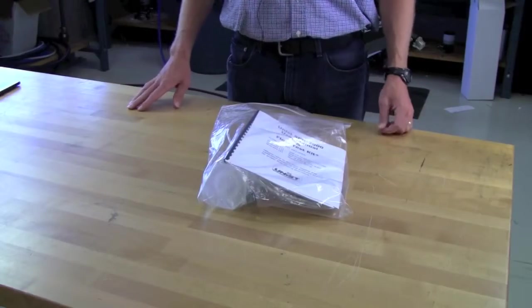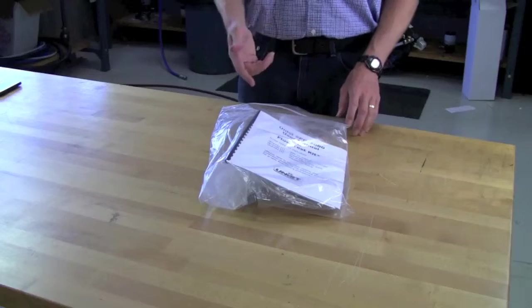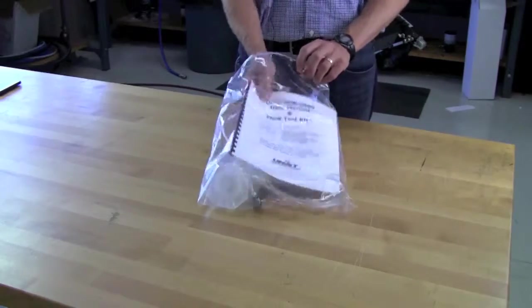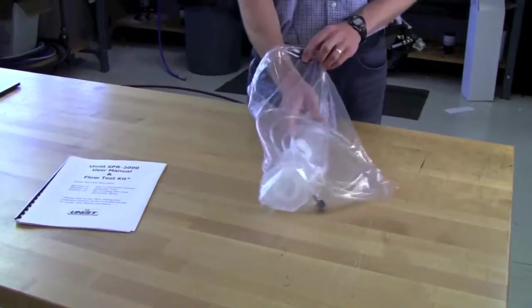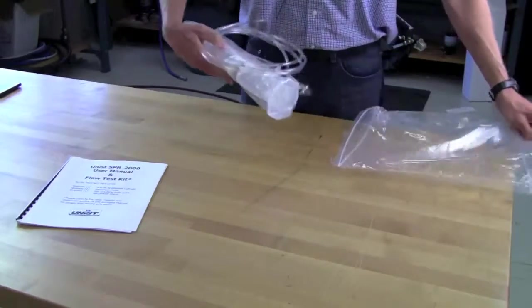With an SPR2000 system, we include a user manual and a flow test kit. I'll pull the user manual out first, and then I'll show you the contents of the flow test kit.